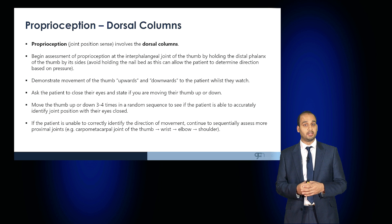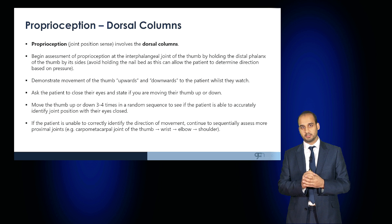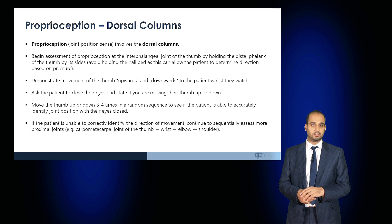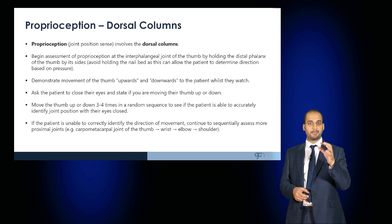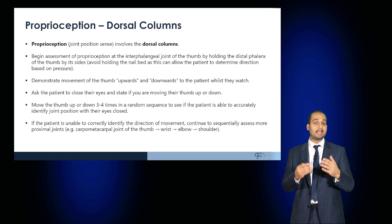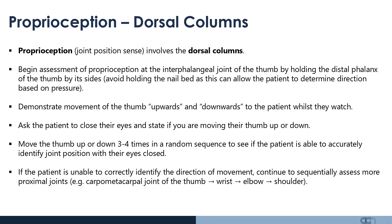Similarly, proprioception or joint position sense also involves the dorsal columns. Begin by assessing proprioception at the interphalangeal joint of the thumb by holding the distal phalanx of the thumb by its sides — avoid holding the nail bed as pressure can convey information. Move the thumb up and down and ask the patient, with eyes closed, to determine which direction the thumb is moving. If proprioception is impaired, sequentially assess more proximal joints: the carpometacarpal joint of the thumb, the wrist, the elbow, and the shoulder.